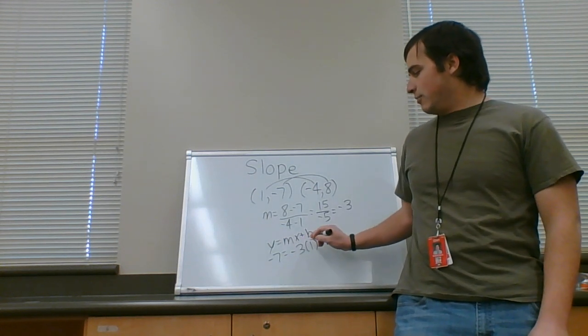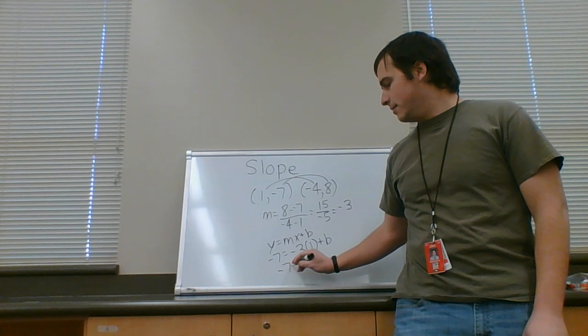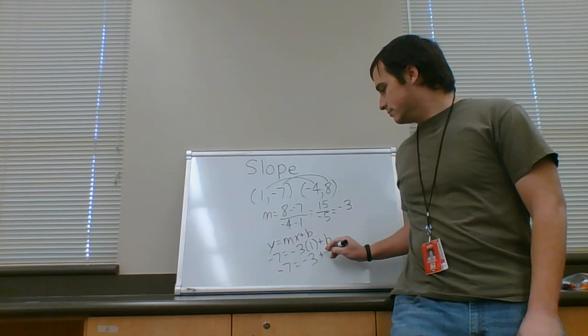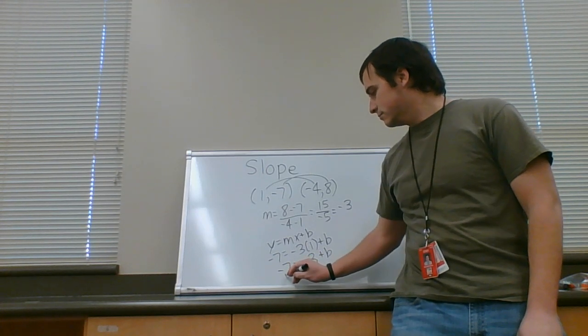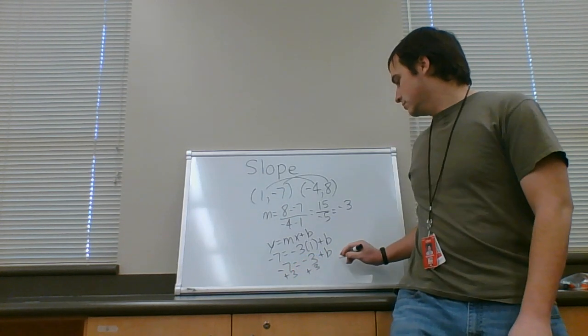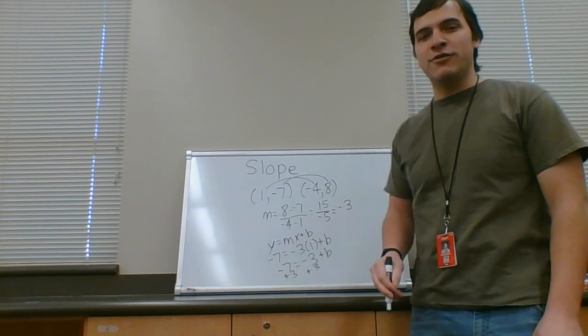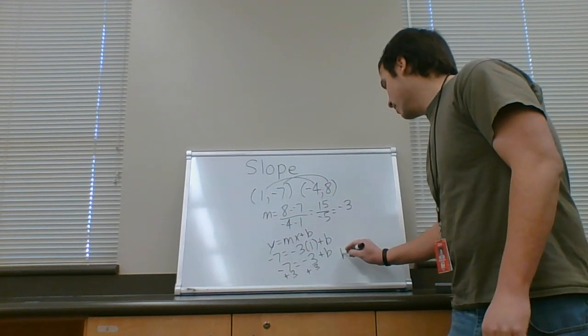Okay, negative three times one is negative three. Add three to both sides. That's a terrible three, but you get the idea. b equals negative four.